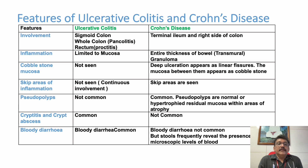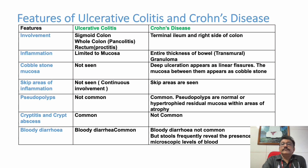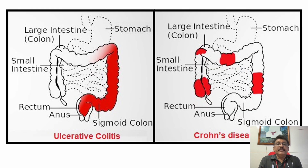Pseudopolyps — not common in ulcerative colitis — are normal or hypertrophic residual mucosa within areas of atrophy. Cryptitis and crypt abscesses are common in ulcerative colitis. Bloody diarrhea is common in ulcerative colitis but not common in Crohn's disease. In summary, the anus, rectum, and sigmoid colon are more involved in ulcerative colitis, whereas the small intestine and part of the colon are involved in Crohn's disease.